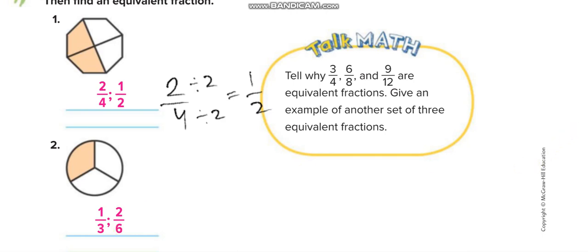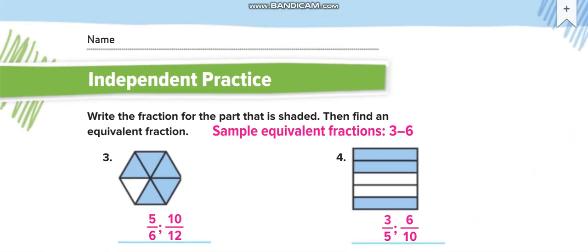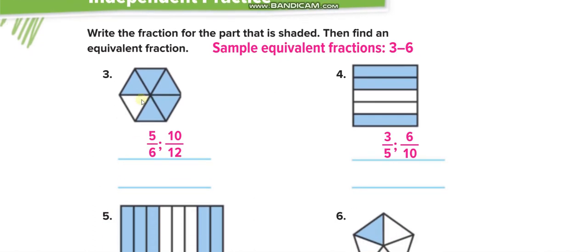On the next page: total six parts, five are shaded. They multiply by two: five times two is ten, six times two is twelve — giving ten over twelve. Another example: total five parts, three are shaded. They multiply by two: three times two is six, five times two is ten — giving six over ten.